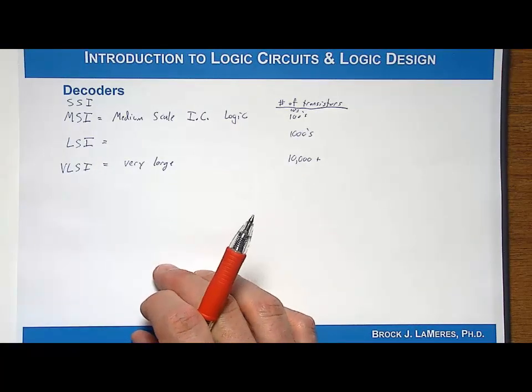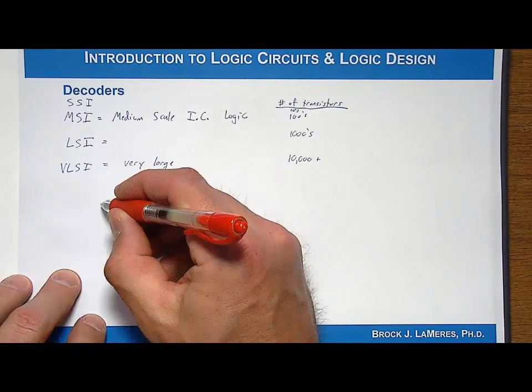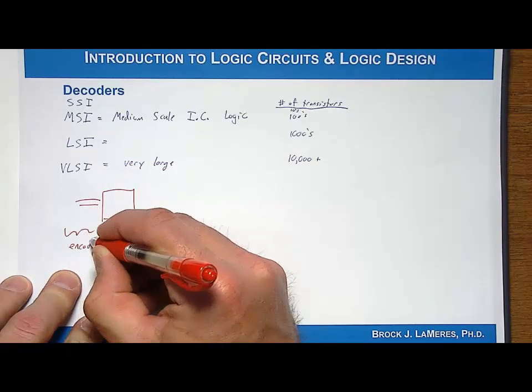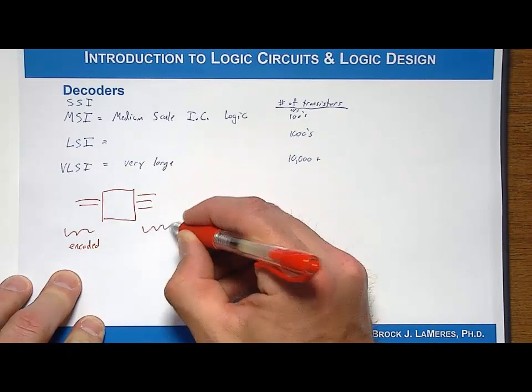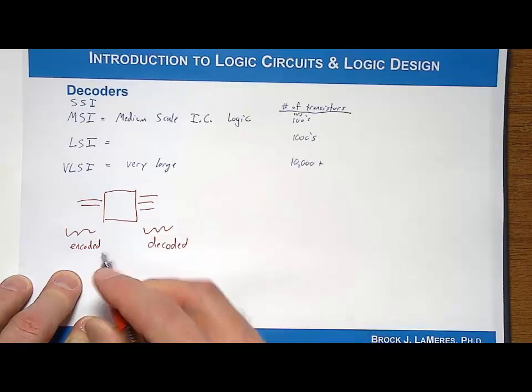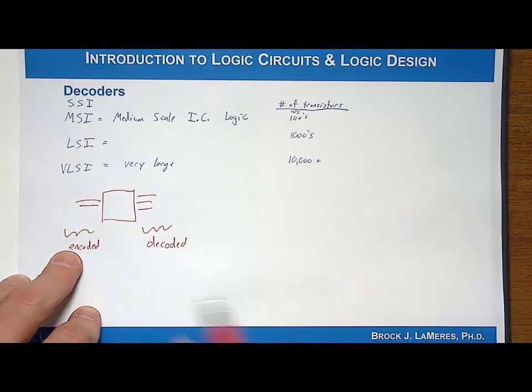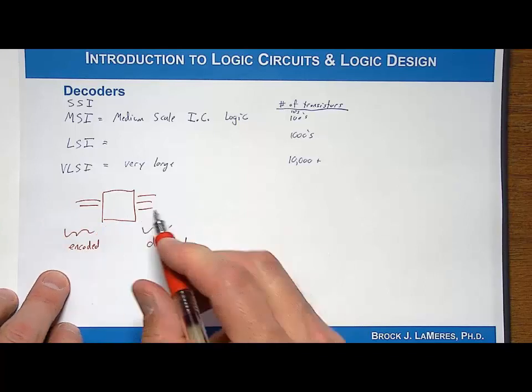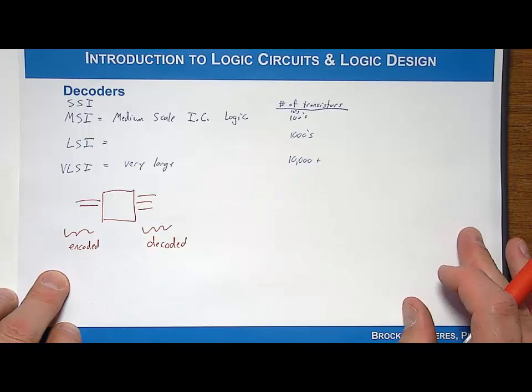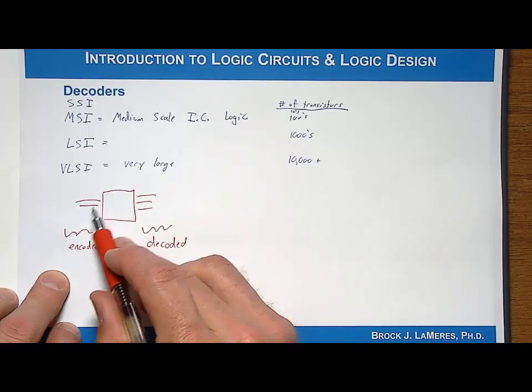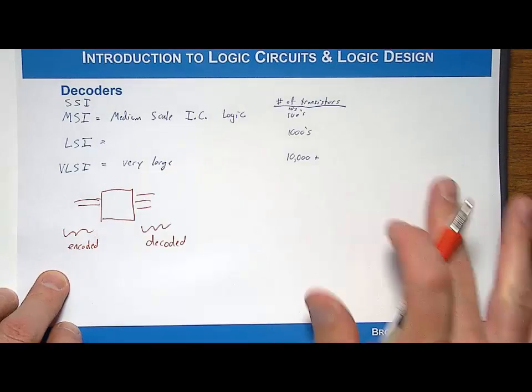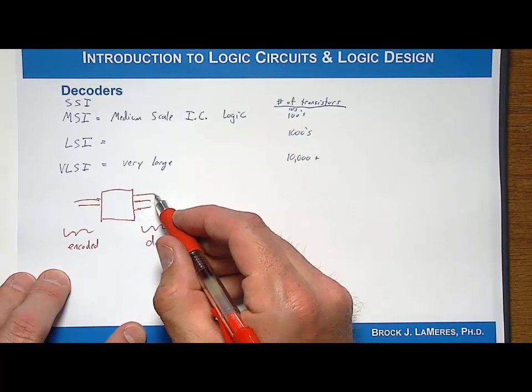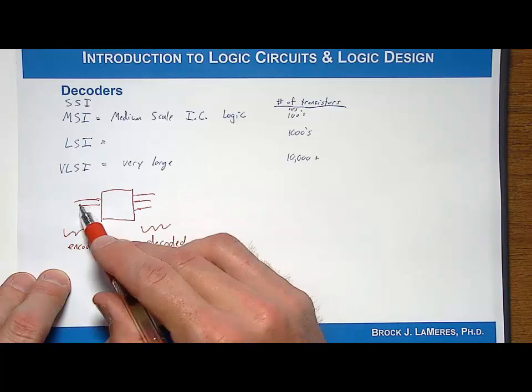There's a couple different types of decoder. But in general, a decoder is a system where its inputs are what we call encoded and its outputs, as you might imagine, are decoded. What does it mean to be encoded? You encode something when you try to save space or area. In this situation, we're encoding it to try to save the number of inputs coming into the system. You might encode something in binary or in any number of codes in order to represent some information in a compact way.